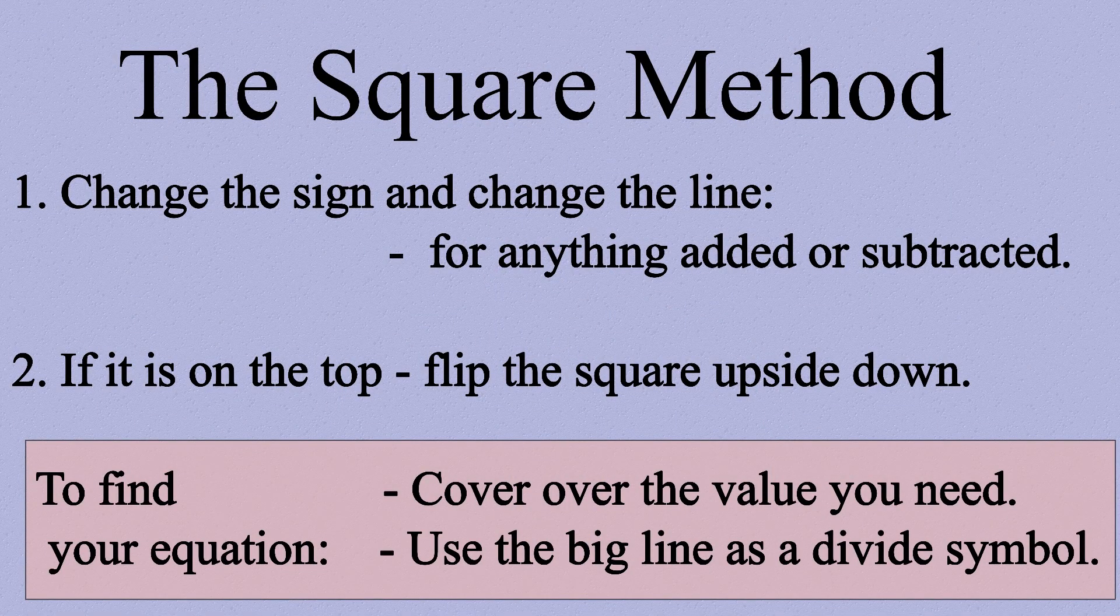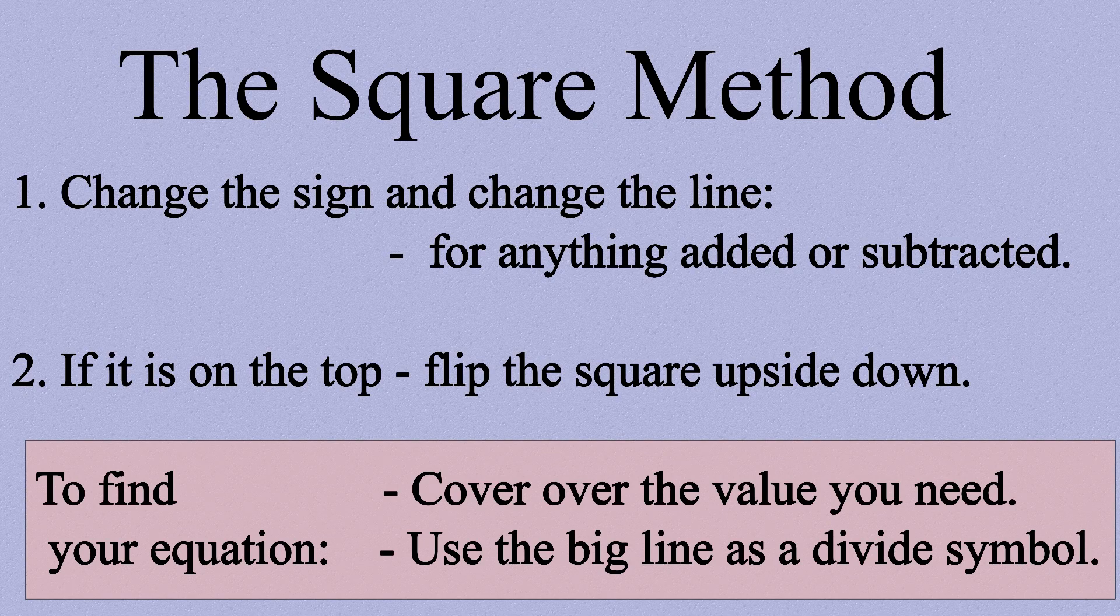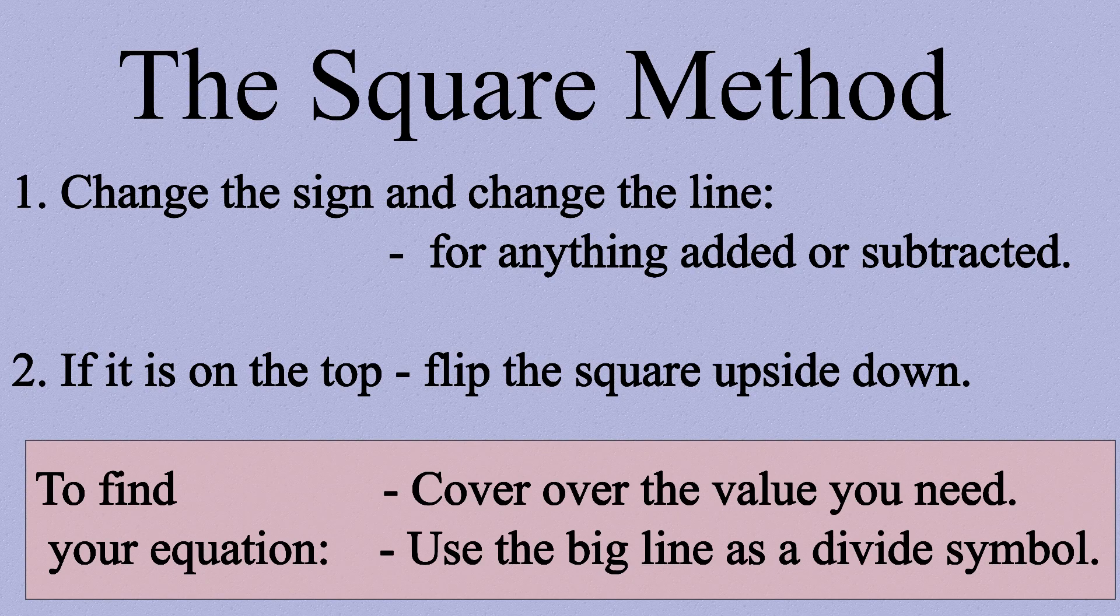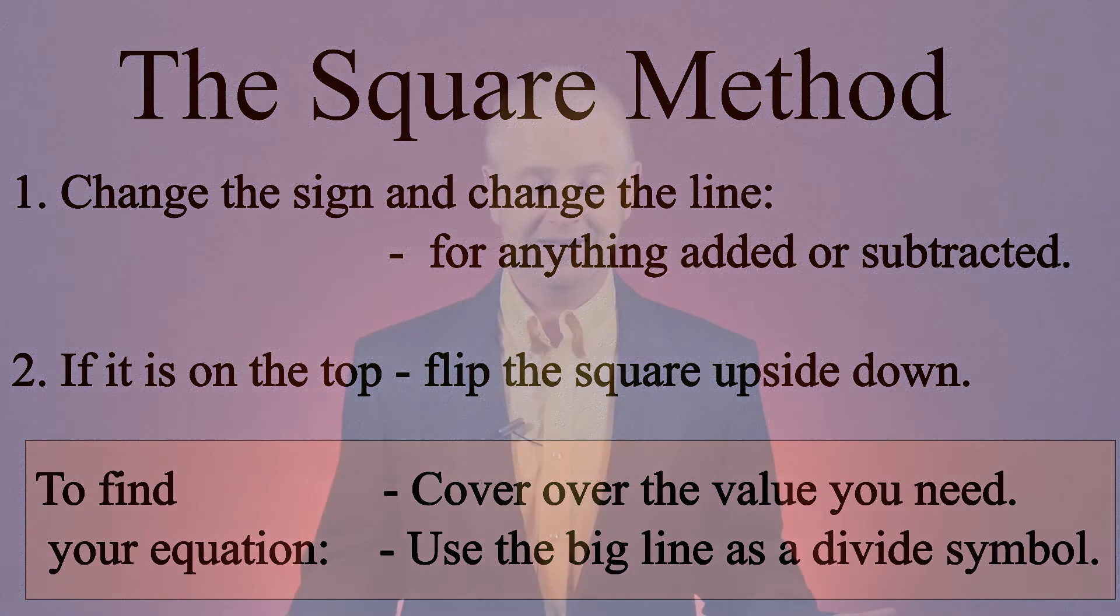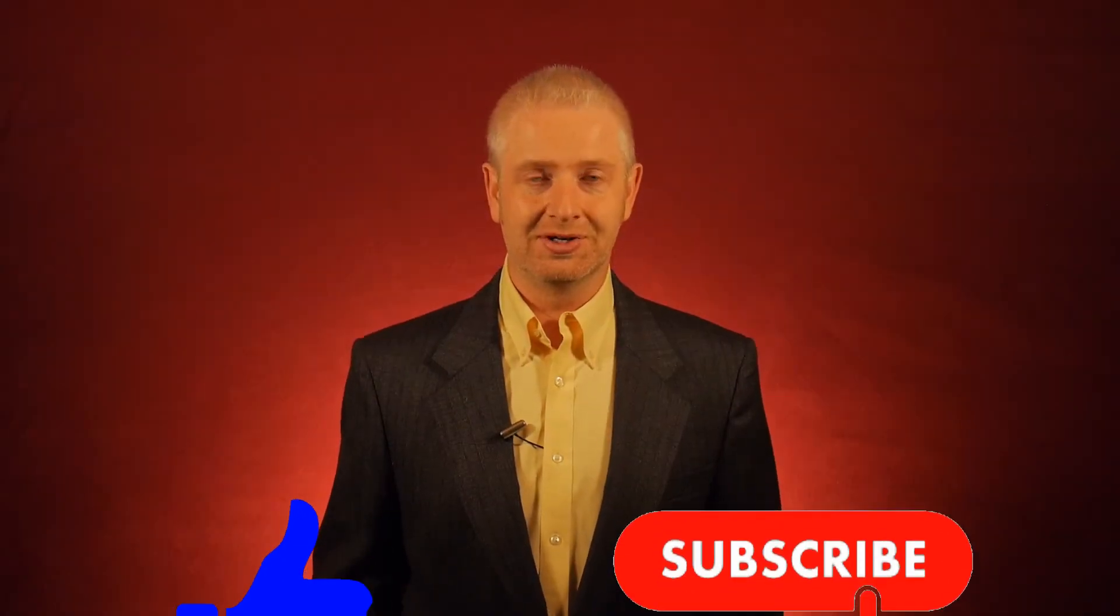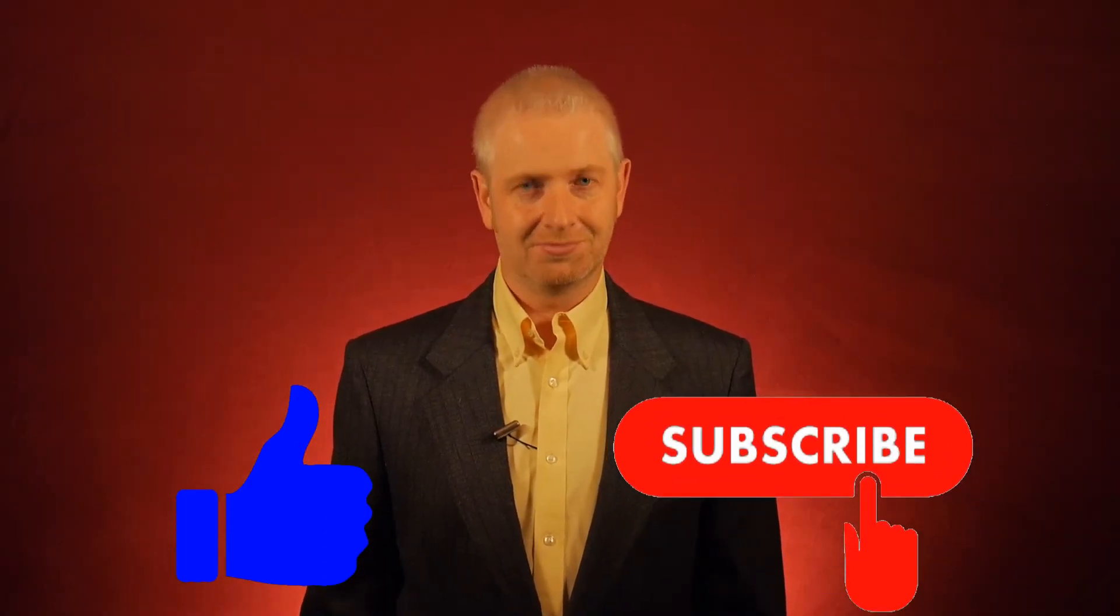So we apply our two rules and the answer comes out easily. Rule number one: change the sign, change the line. Rule number two: if it's on the top, flip the square upside down. And that's it. There's nothing else to it. Well done.